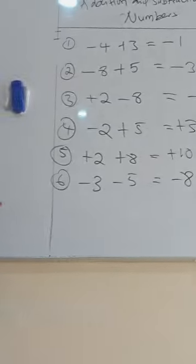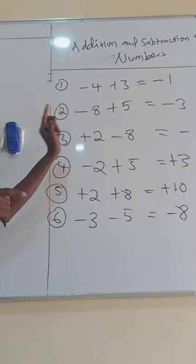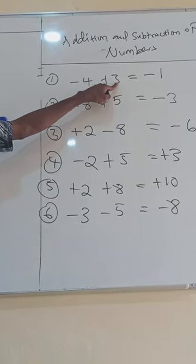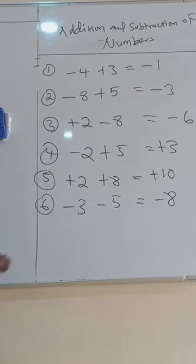8. Now, in summary, when you have different signs, pick the sign that has the highest number and also you subtract. You find the difference between the two numbers. When the signs are the same, pick the sign and add the numbers.